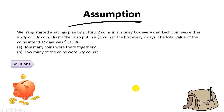Let's look at the one changing question or assumption question, which is from a past PSLE math paper. Wei Yang started a savings plan by putting two coins in a money box every day. Each coin was either a 20 cents or 50 cent coin. His mother also put in a one dollar coin every seven days. The total value of the coins after 182 days was $133.90.